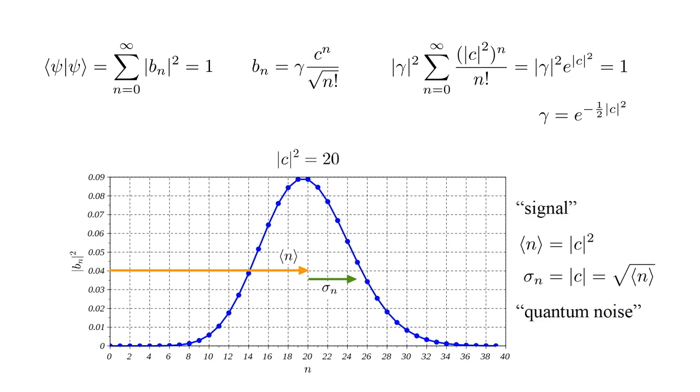Treating the mean value of n as a signal, σn can be thought of as quantum noise. In many applications, |c|² is large enough that quantum noise is negligible by comparison. Quantum noise does play a significant role in fiber optic digital communication, for which it sets a limit on the bit error rate proportional to |b0|², which equals e^(-⟨n⟩). Thus, lower bit error rates require a higher average number of photons per data bit.